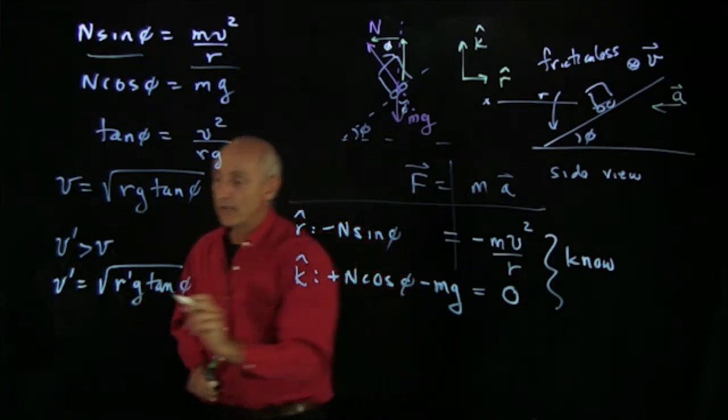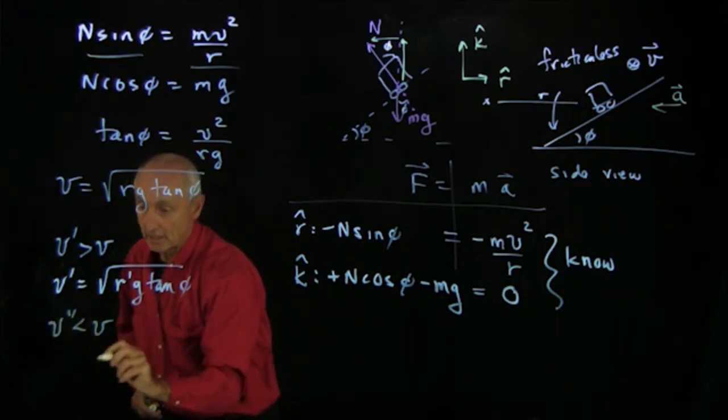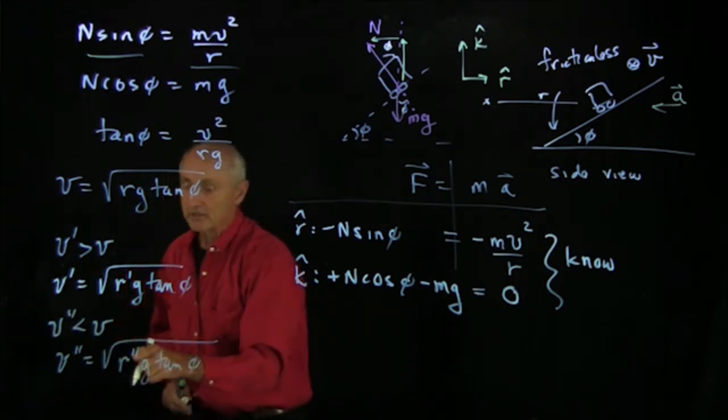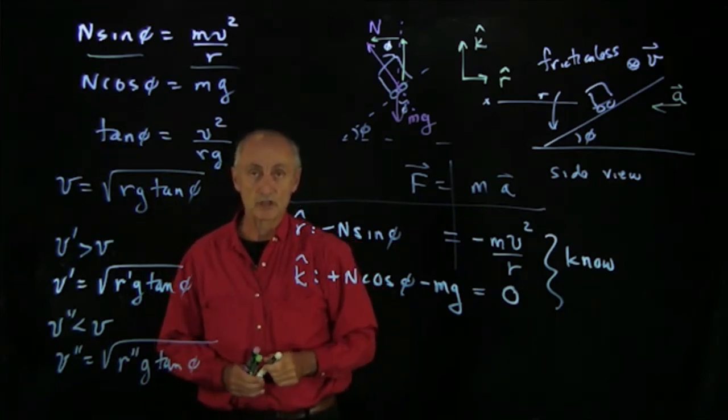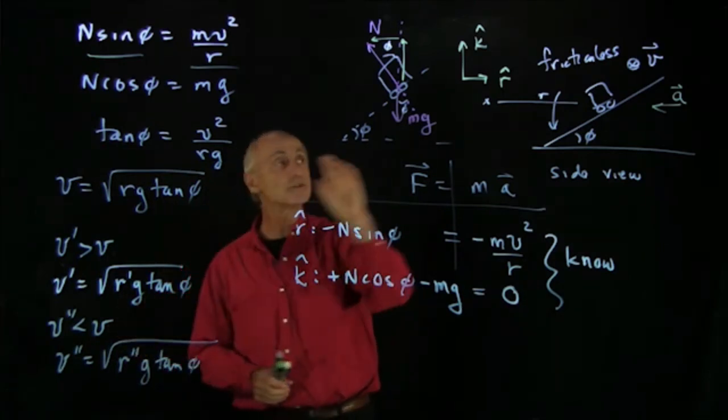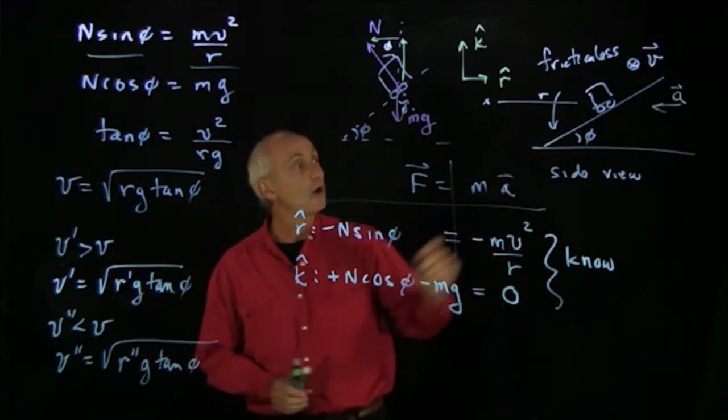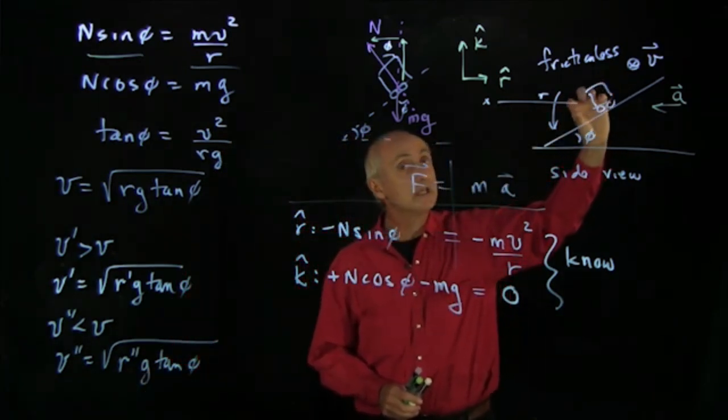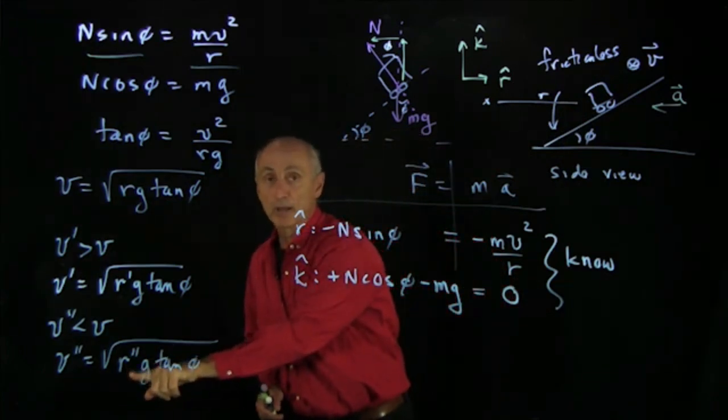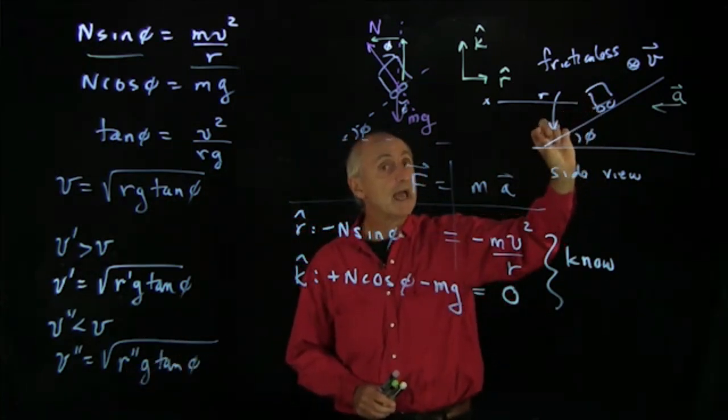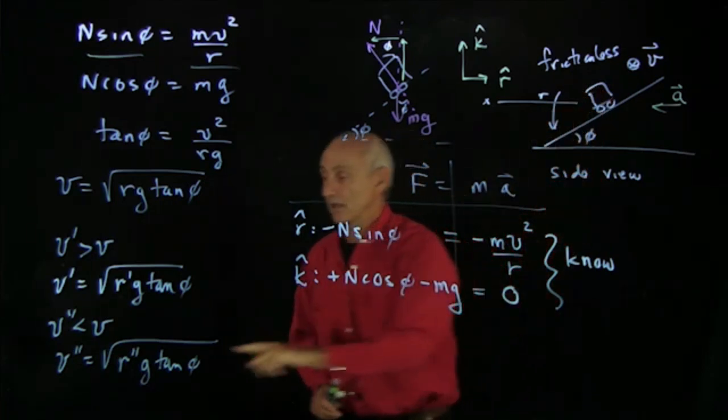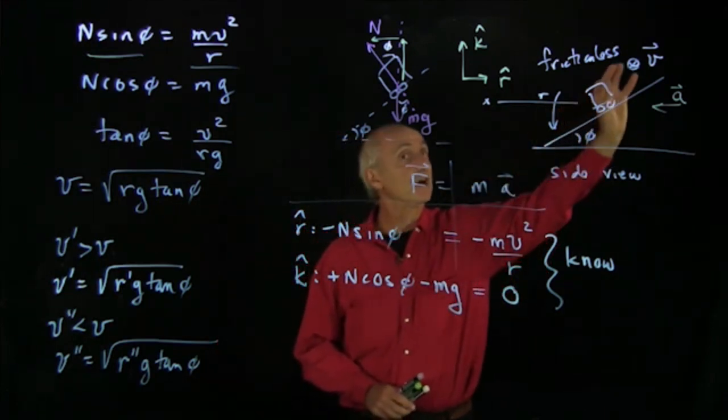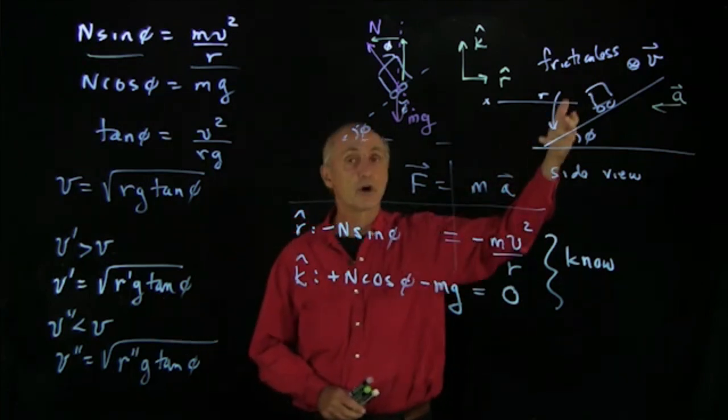The same thing too, if we have v double prime less than v, then v double prime is equal to r double prime g tan phi. Now, remember, this double prime is not two derivatives. I'm just using that as a notation to indicate different speeds. So if the car is going along at speed v and slows down, what will happen is the new equilibrium radius is smaller. So the car slides down the inclined plane until it gets to r double prime. It turns out that it will overshoot that a little bit and then start to move up. And again, it will oscillate around this new equilibrium length. So on a frictionless inclined plane, if you go faster than this speed, the car slides up. If you go slower than this speed, the car slides down.